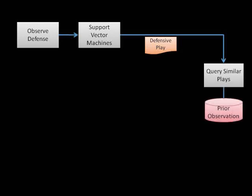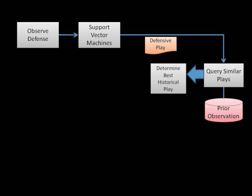Once the offense is aware of which defensive play is in action, it can use prior observations to determine the play most similar to the current offensive play, and which one performed best against this defense. Once the offense has identified the best historical play for this particular defense, there is a decision to make.